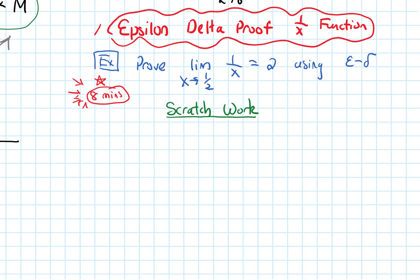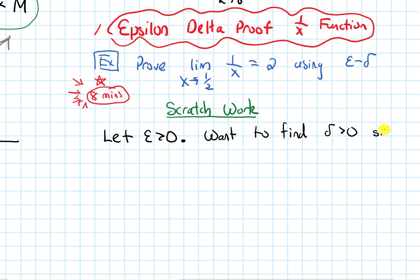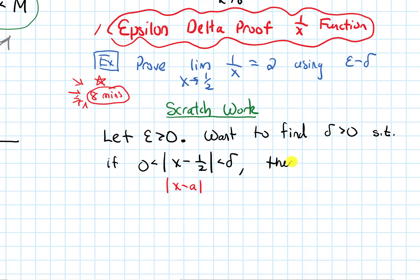In the scratch work, let's let epsilon be greater than 0. We want to find a number delta greater than 0 such that if 0 is less than the absolute value of x minus a — in this case a is 1/2 — so absolute value of x minus 1/2 is less than delta, then the absolute value of f(x) minus the limit L, so |1/x − 2|, will be less than epsilon.